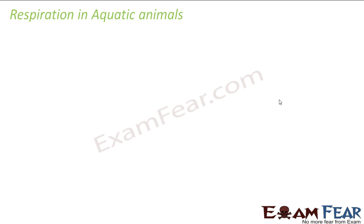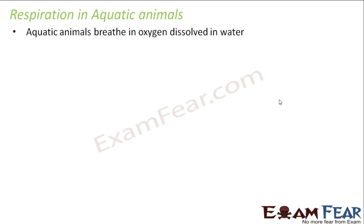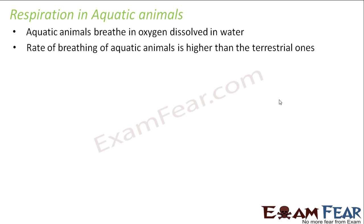Let us start with aquatic animals — how respiration happens in case of animals which live in water. Aquatic animals breathe in oxygen dissolved in water. Normally in case of plants, they utilize oxygen or carbon dioxide present in the atmosphere. But for aquatic animals, those living in water, they need to utilize oxygen. The rate of breathing of aquatic animals is higher than the terrestrial ones.